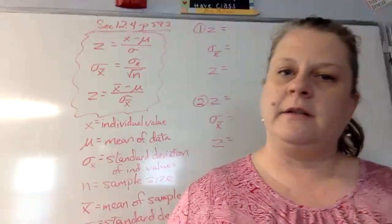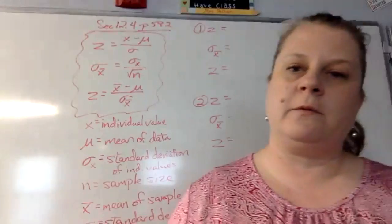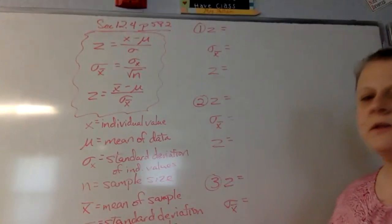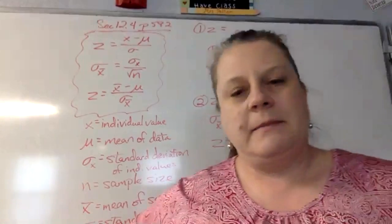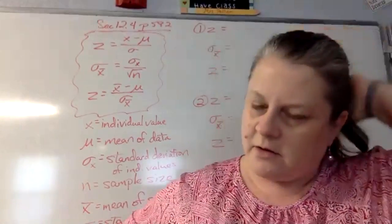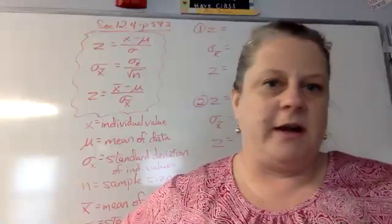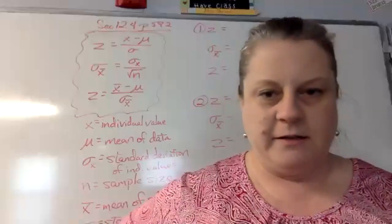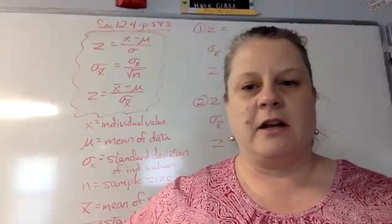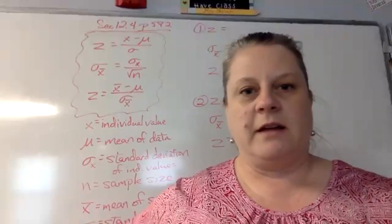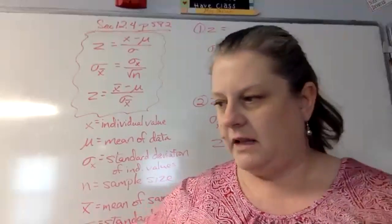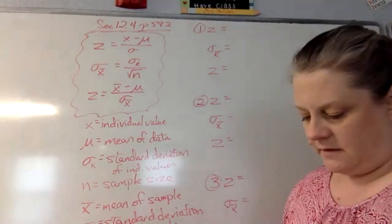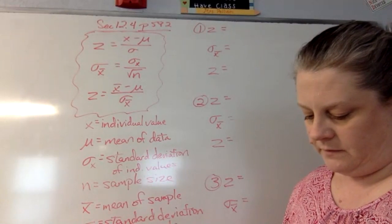We're on section 12.4 today, which is on page 482. As I was going through this, some of these questions were on your quiz yesterday — apparently they don't know what section they were supposed to be quizzing over, but it's got the same questions again. I've learned I can't trust their quiz book; I need to look at it because I have to change when they do stuff. It said it was just over section 12.3 but it obviously has some stuff from 12.4 as well.